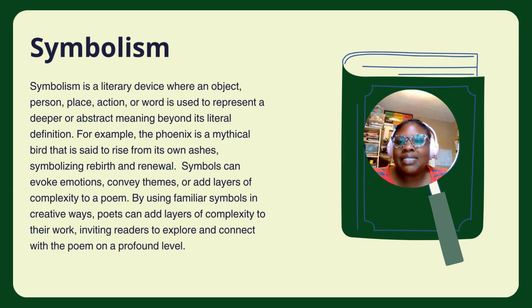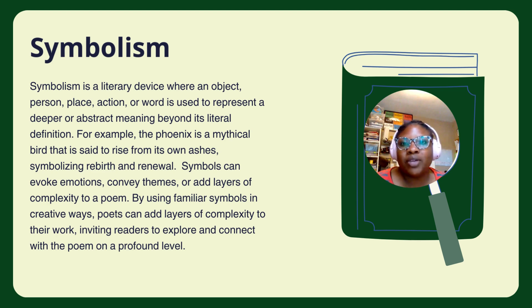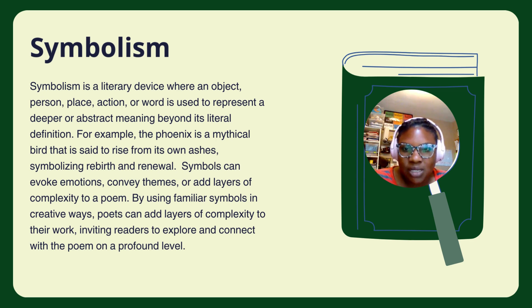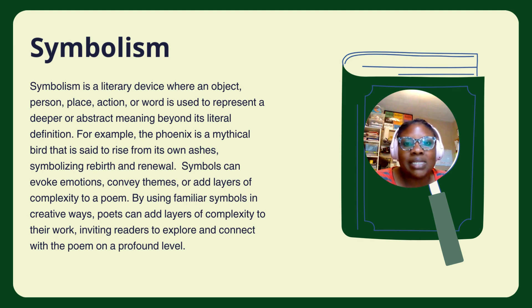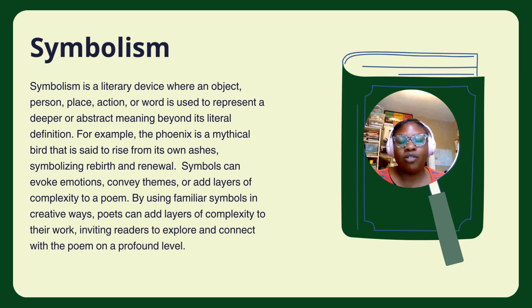Symbolism is a literary device where an object, person, place, action, or word is used to represent a deeper or abstract meaning beyond its literal definition. For example, the phoenix is a mythical bird that is said to rise from its own ashes, symbolizing rebirth and renewal. Symbols can evoke emotions, convey themes, and add layers of complexity to a poem. By using familiar symbols in creative ways, poets can invite readers to explore and connect with the poem on a profound level.